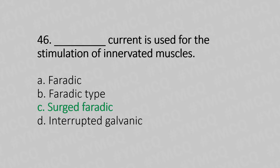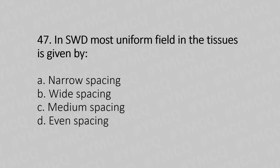Question 47: In shortwave diathermy (SWD), the most uniform field in the tissue is given by — Option A: narrow spacing. Option B: wide spacing. Option C: medium spacing. Option D: even spacing. The answer is Option C: medium spacing.